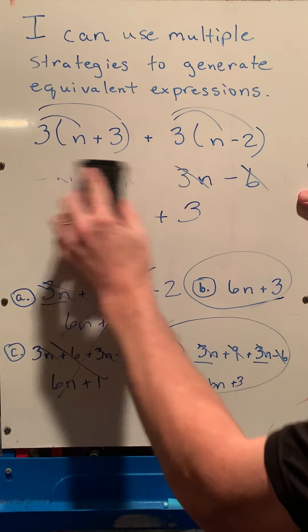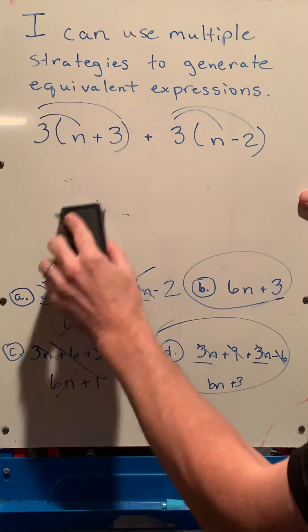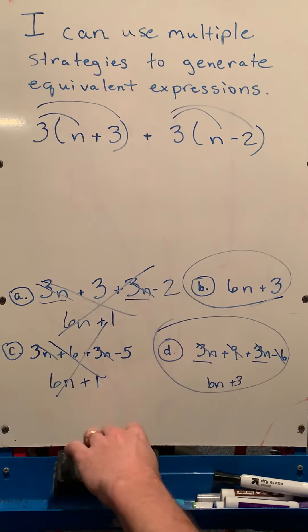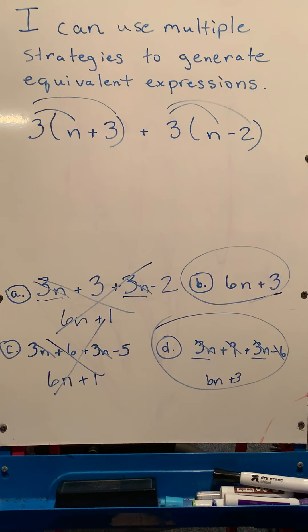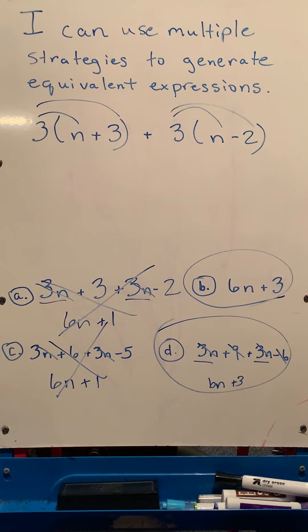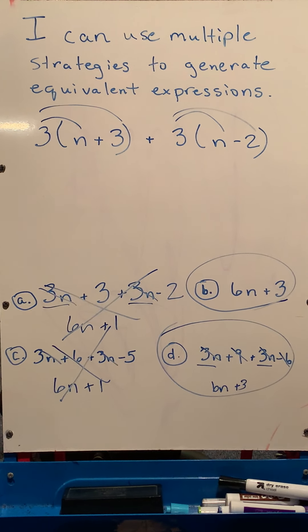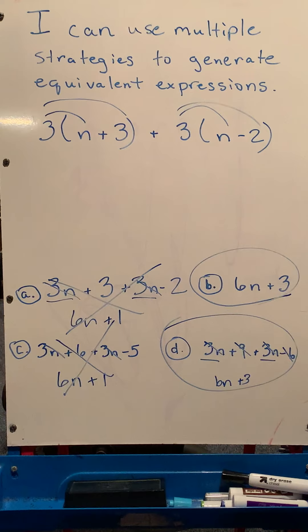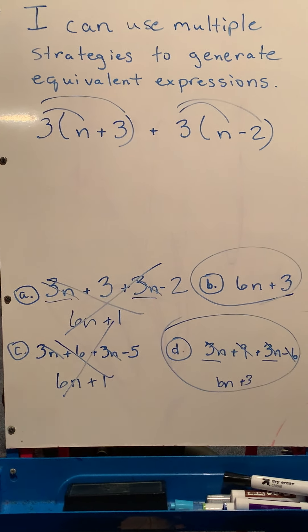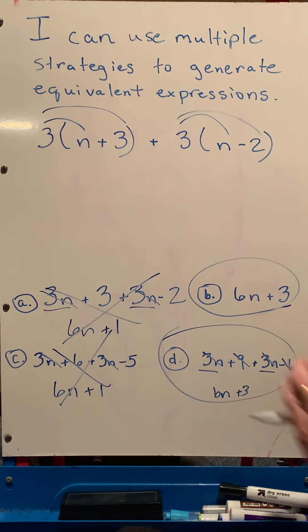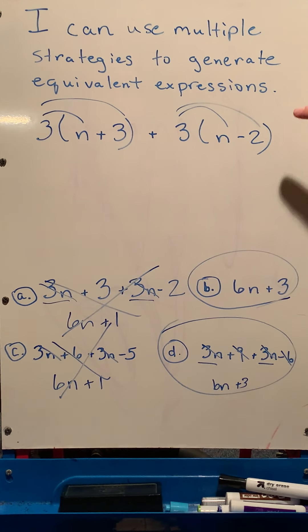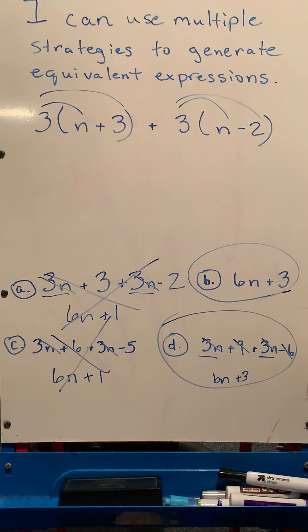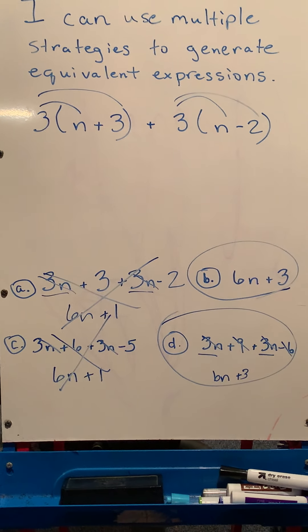You could also use substitution and plug it in, and see if you get the same thing. It's a little bit more time-consuming. When you pick a number to substitute in, I usually wouldn't pick 0 or 1, because they have different properties, and you may get it, and you think it's right, but it might not be necessarily all the time. So if I plug a number in or substitute a number in for n in this and down in my choices, I should get the same answer, and then I'd know they'd be equivalent.